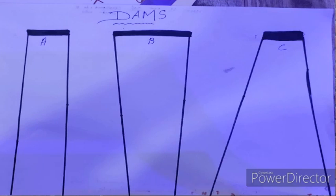Today's topic is water pressure and we are going to start with a question. You can see on the screen there are 3 dams — Dam A, Dam B, and Dam C. All 3 dams have different designs. Write in the comment section which design you have come across or normally seen in dam construction.